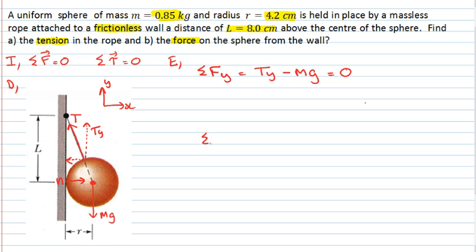We also have the sum of the forces in the X direction. Here we can say that the normal force acts in the positive X direction. The horizontal component of the tension force, Tx, acts to the left, so it's negative. The sum of those two forces must be zero as well. They're the only forces acting horizontally.